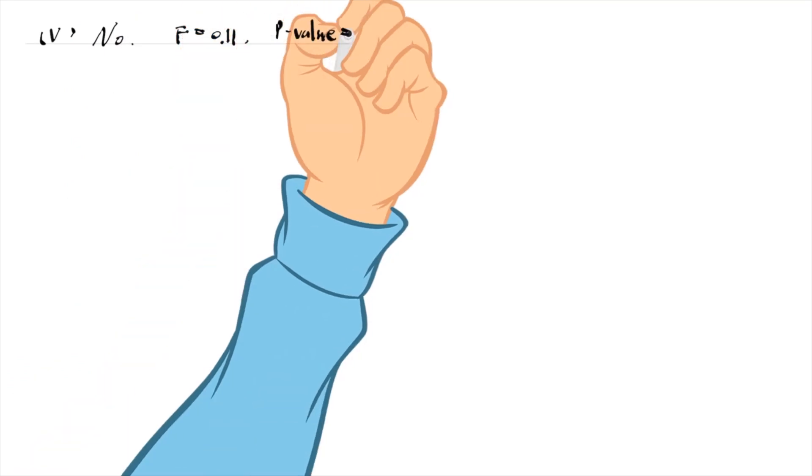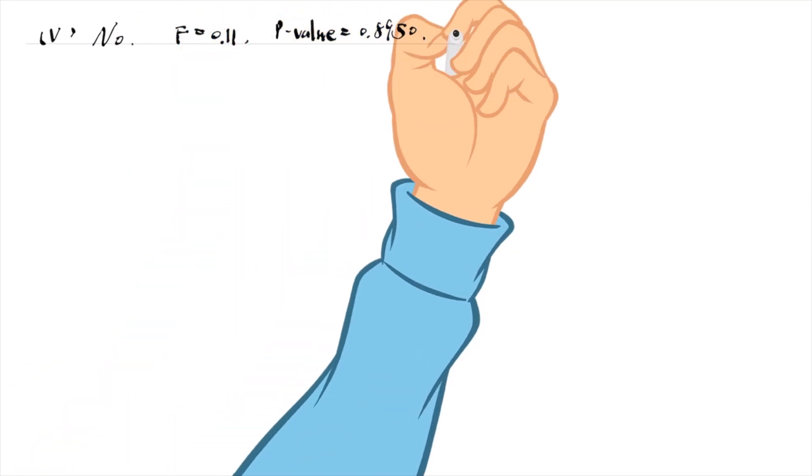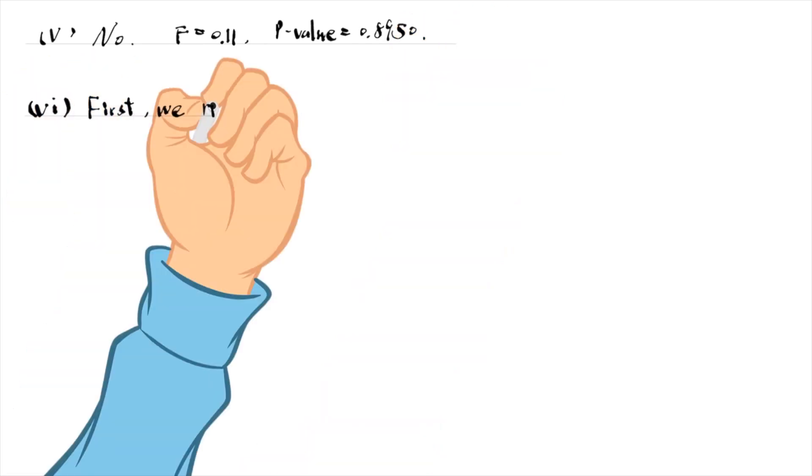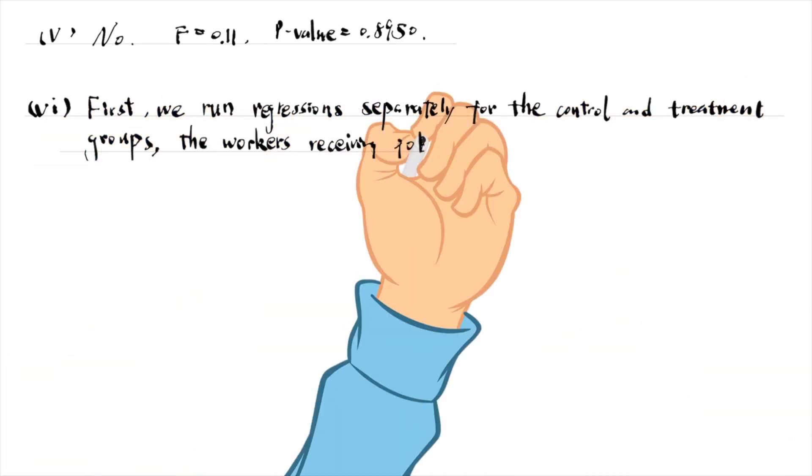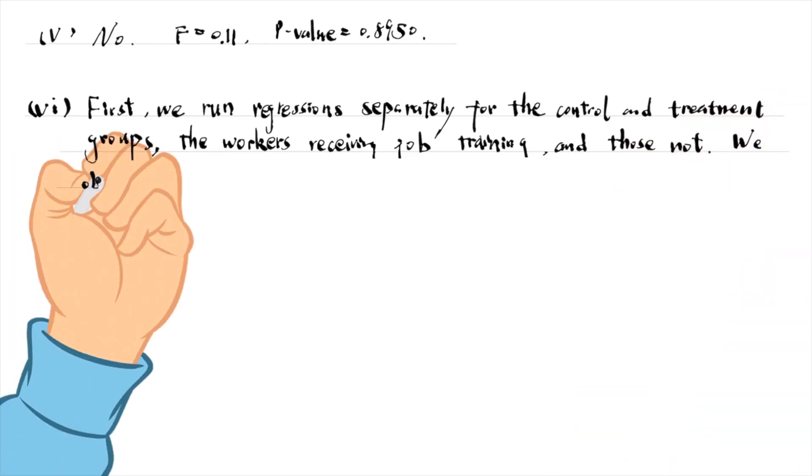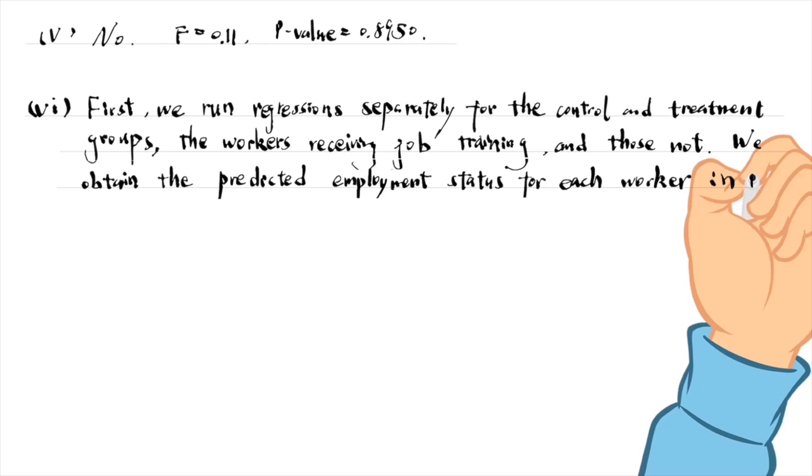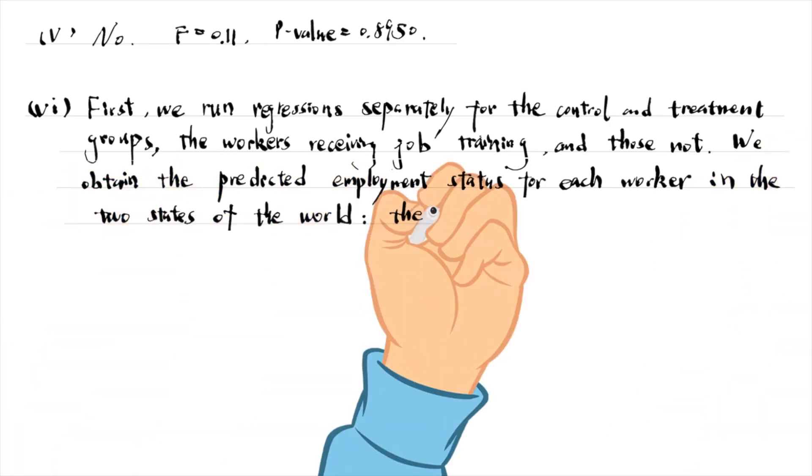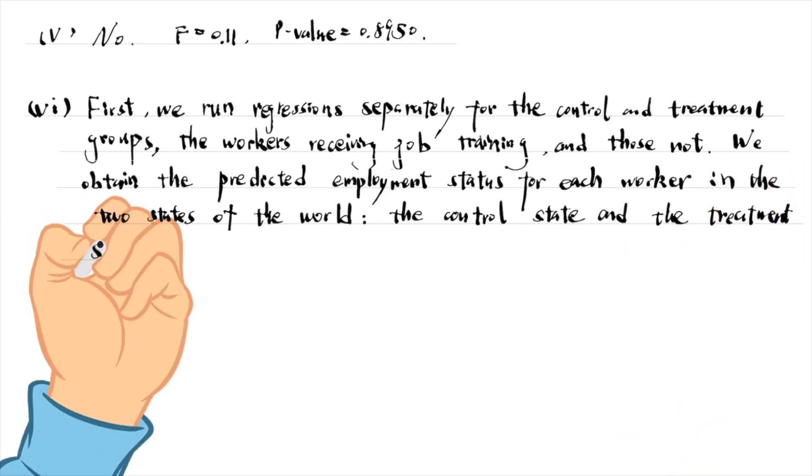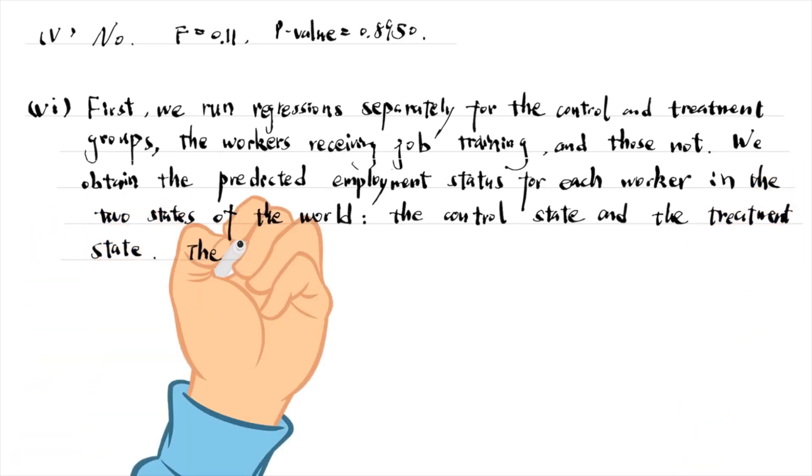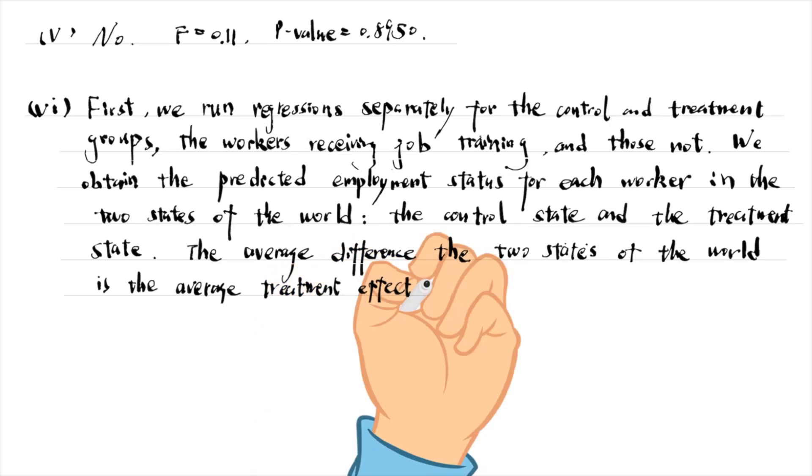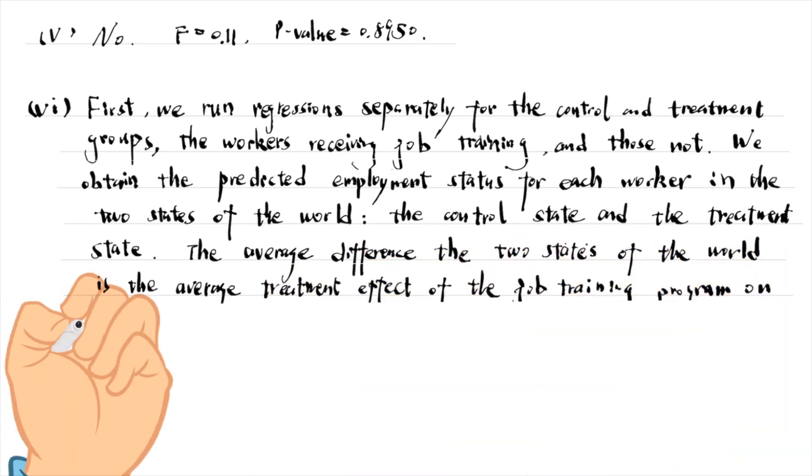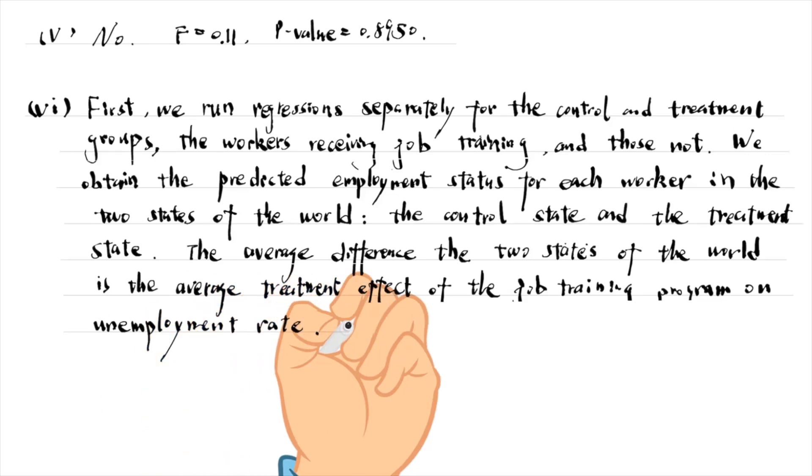For the last part, we run regressions separately for the control and treatment groups, the workers receiving job training and those not. We obtain the predicted employment status for each worker in the two states of the world, the control state and the treatment state. The average difference between the two states of the world is the average treatment effect of the job training program on unemployment. It is minus 0.123, the same as that in part 4. It is more convenient in part 4 for obtaining a standard error.